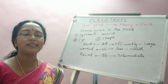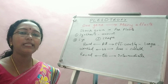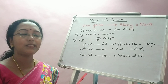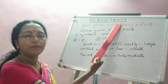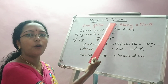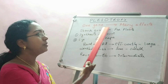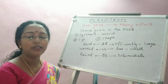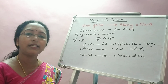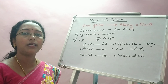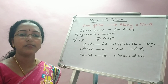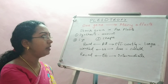Welcome to today's session. We have been dealing with deviations from Mendelian genetics, and today I have come with a new concept named pleiotropy. Pleiotropy is very simple: it means one gene showing many effects. So far we have learned that every character in our body is controlled by a gene — one gene controls one particular character — but today we are going to learn about one gene controlling many characters or traits.